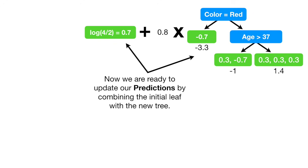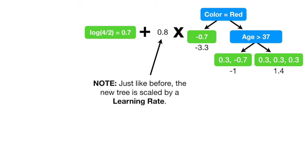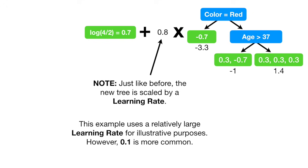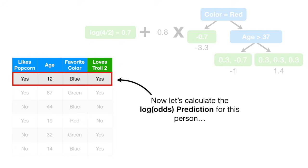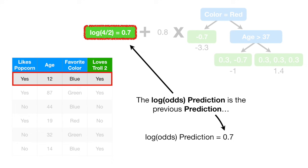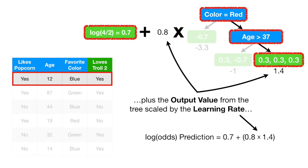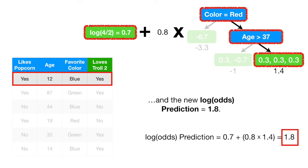Now we are ready to update our predictions by combining the initial leaf with the new tree. Note: just like before, the new tree is scaled by a learning rate. This example uses a relatively large learning rate for illustrative purposes; however, 0.1 is more common. Now let's calculate the log of the odds prediction for this person. The log of the odds prediction is the previous prediction, 0.7, plus the output value from the tree scaled by the learning rate, 0.8 times 1.4. The new log of the odds prediction equals 1.8.